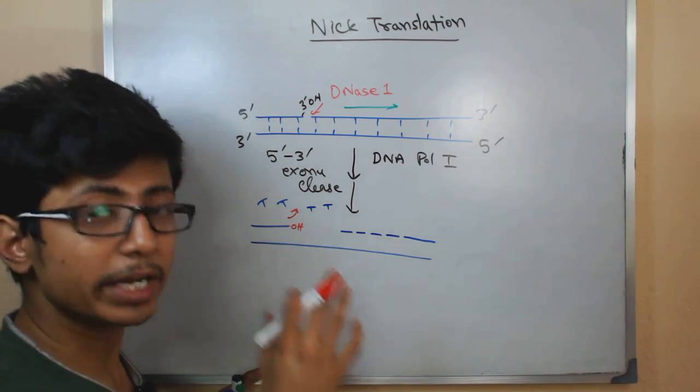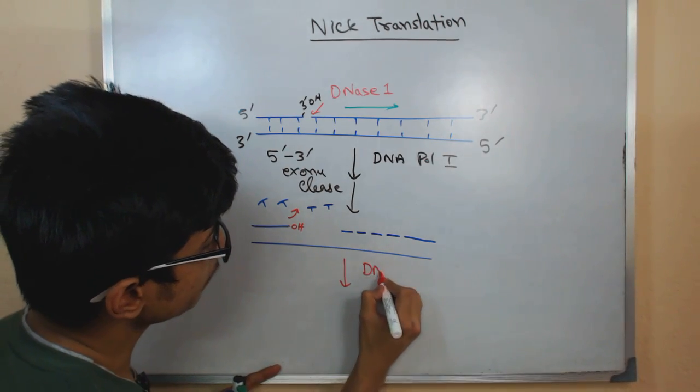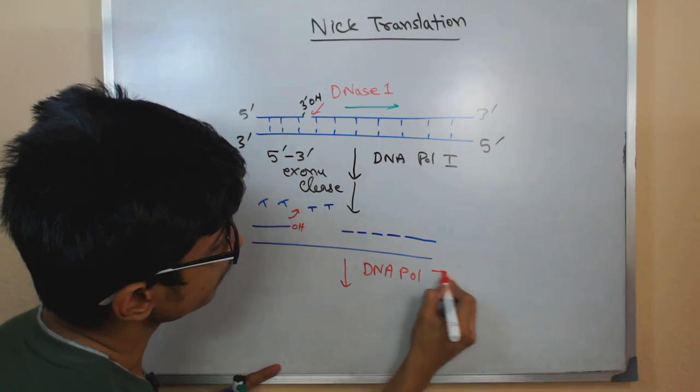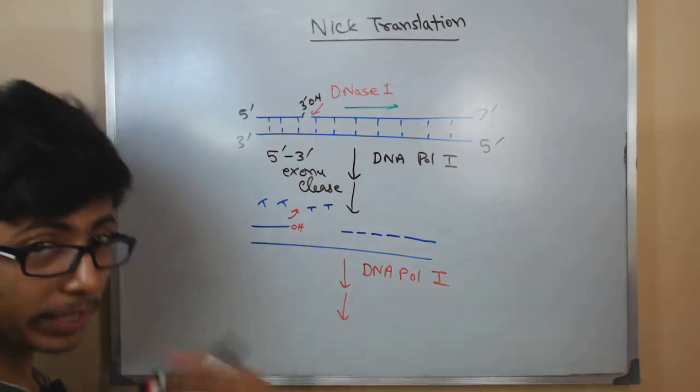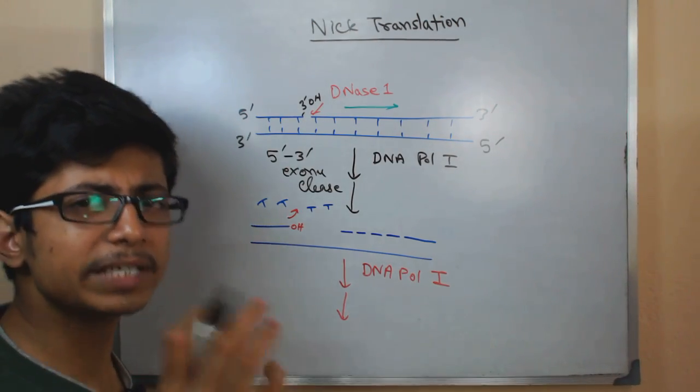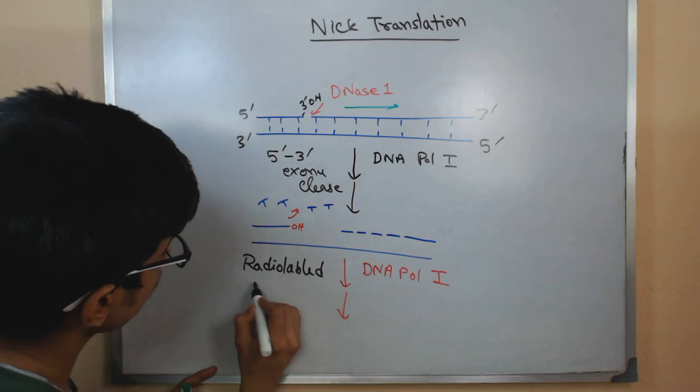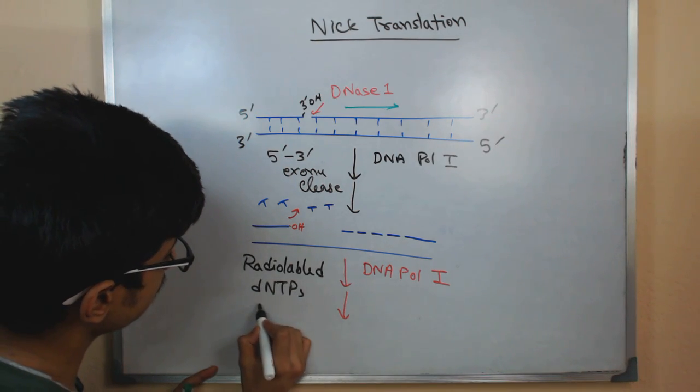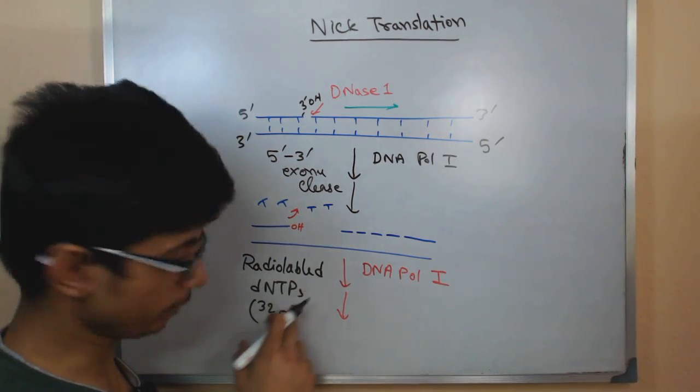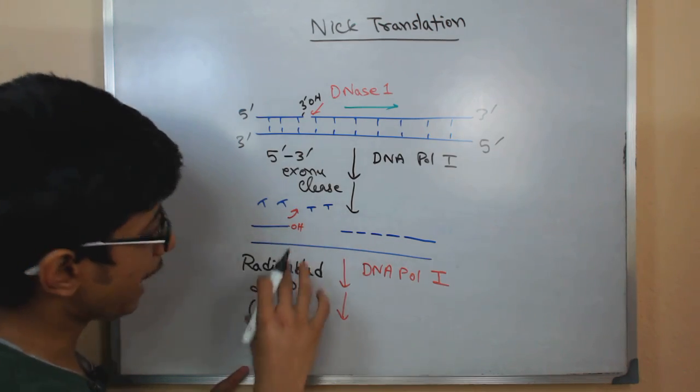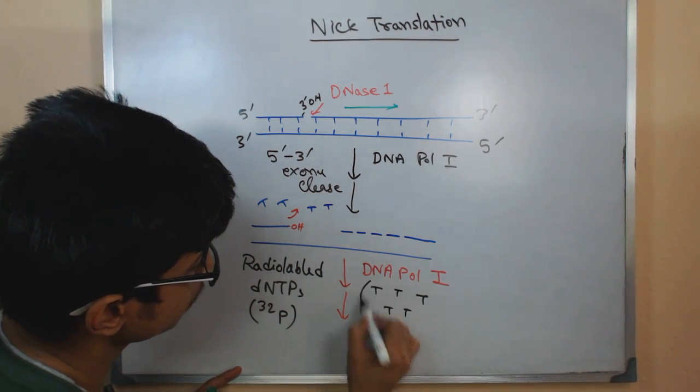So once this is there it's ready to go, then what will we do? We add DNA polymerase, which is there, and alongside what we will add: we will add radiolabeled or any kind of tagged - fluorescently tagged or radiolabeled - let's say radiolabeled dNTPs with P32, the phosphorus for the nucleotide will be P32 isotope. So we add these radiolabeled dNTPs in the place and let's say the radiolabeled dNTPs are this black in color.